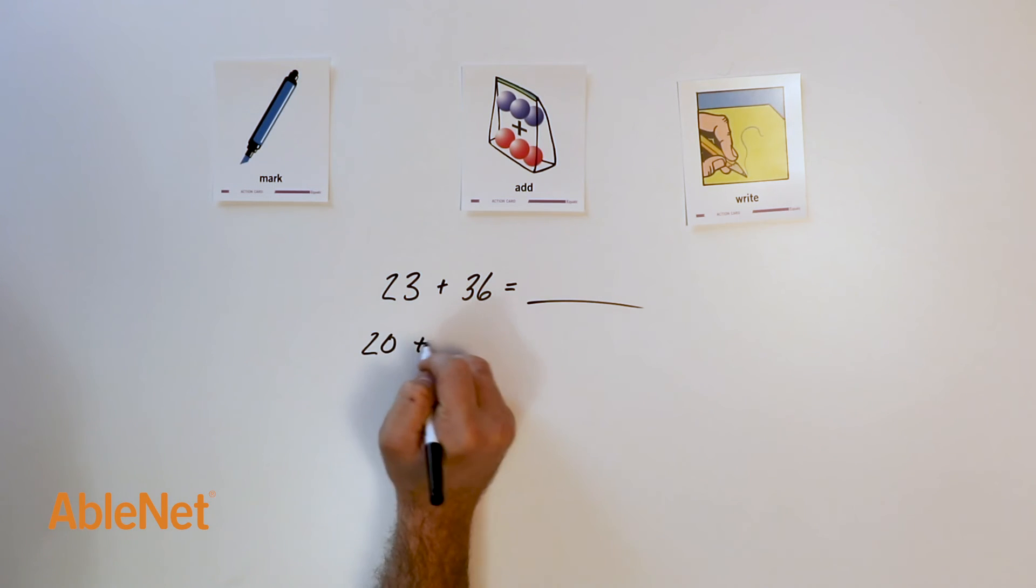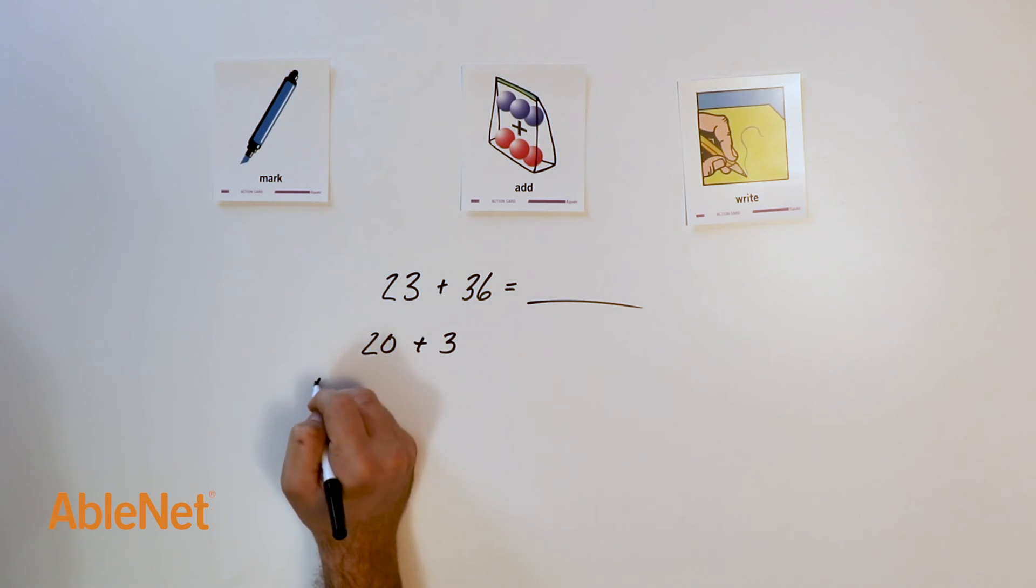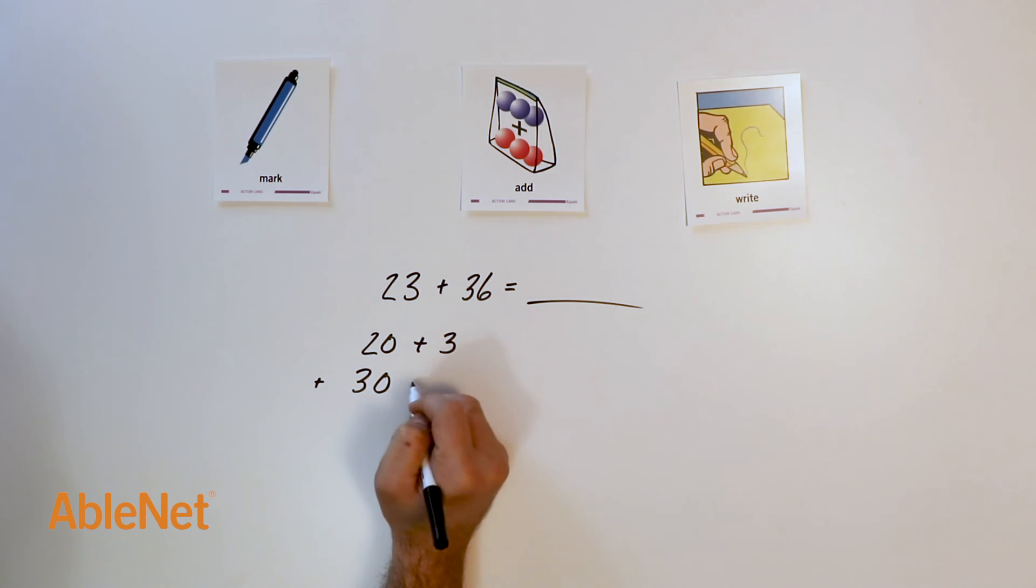23 becomes 20 plus 3. 36 becomes 30 plus 6.